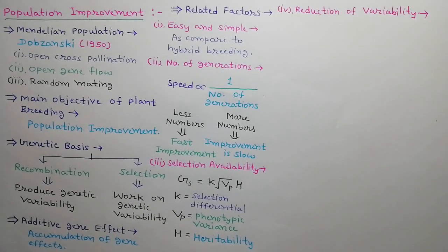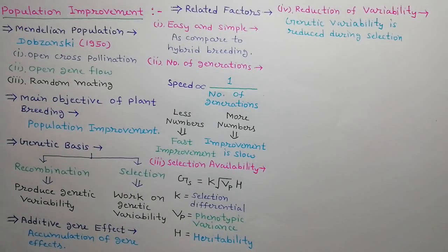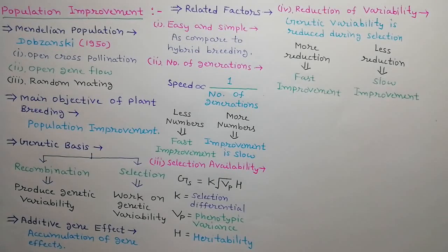Next factor is reduction of variability. During the process of selection, genetic variability of population gets reduced per selection cycle. More reduction means fast improvement in less number of selection cycles. Less reduction means slow improvement in more number of selection cycles.